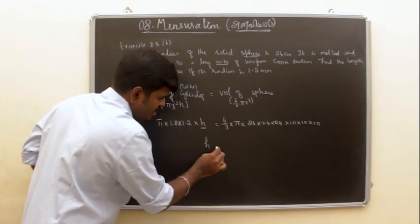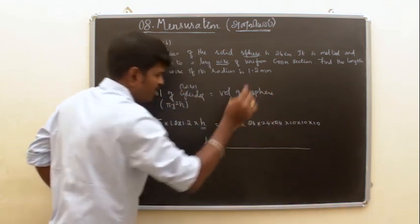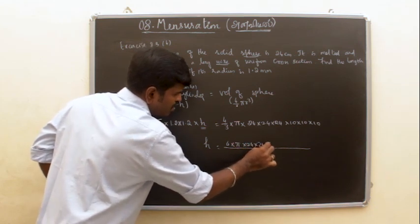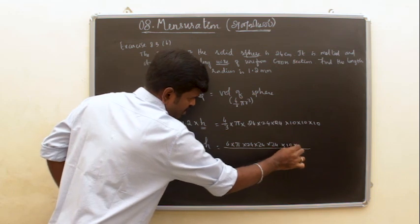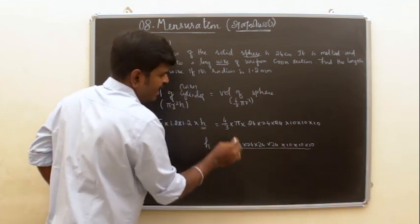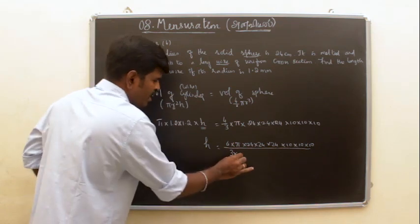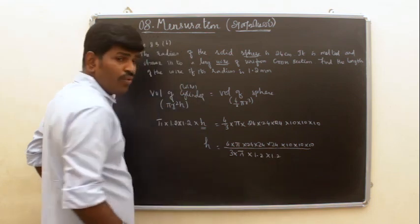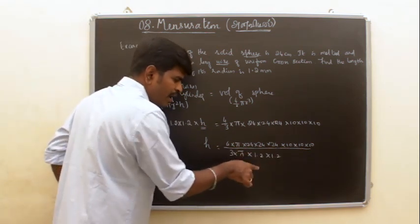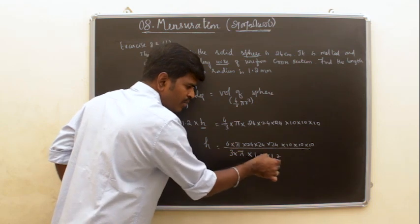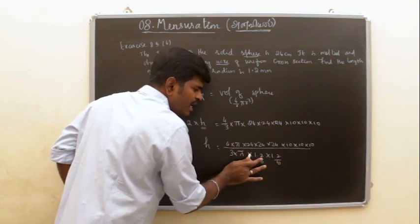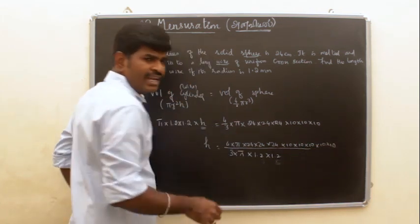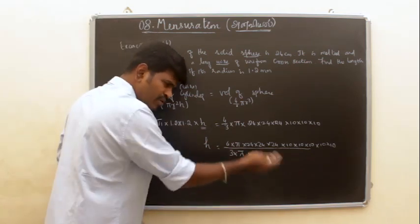We have to balance. π × 1.2 × 1.2 × h equals 4/3 × π × 24 × 24 × 24. Remember this calculation is important.